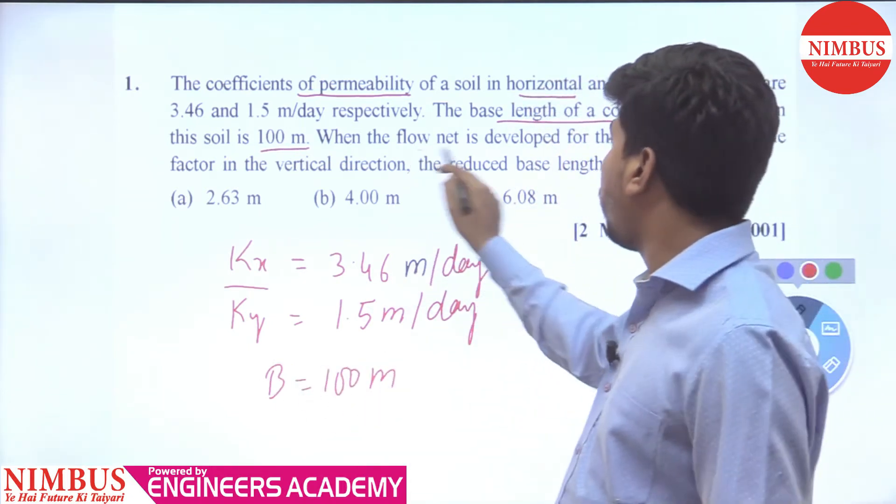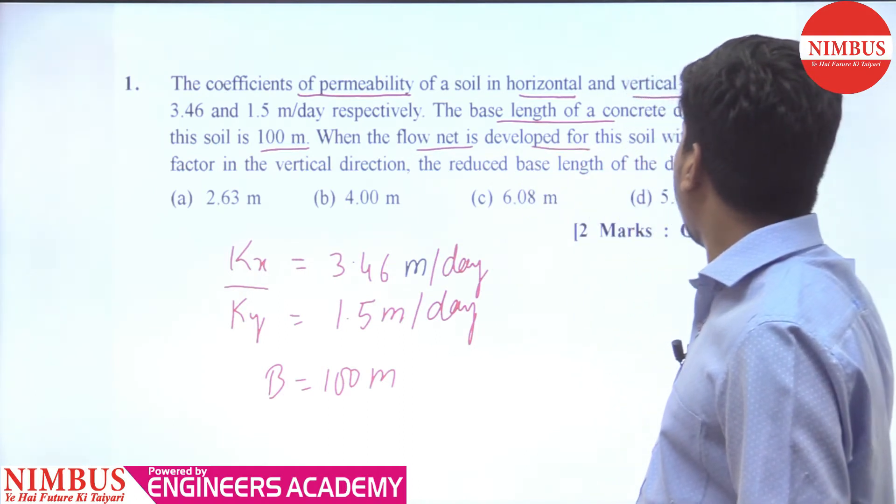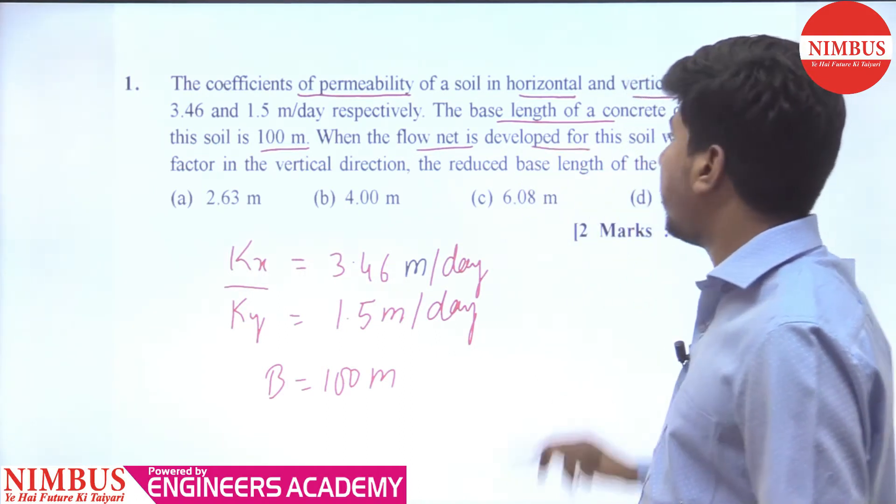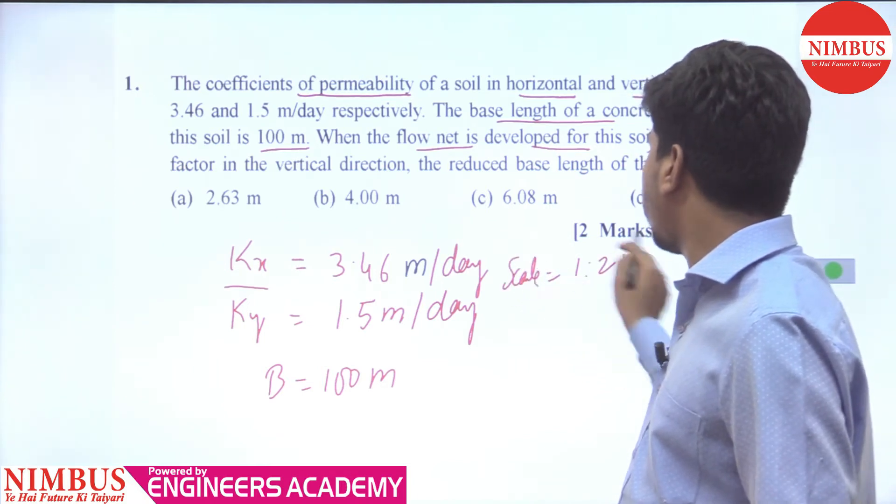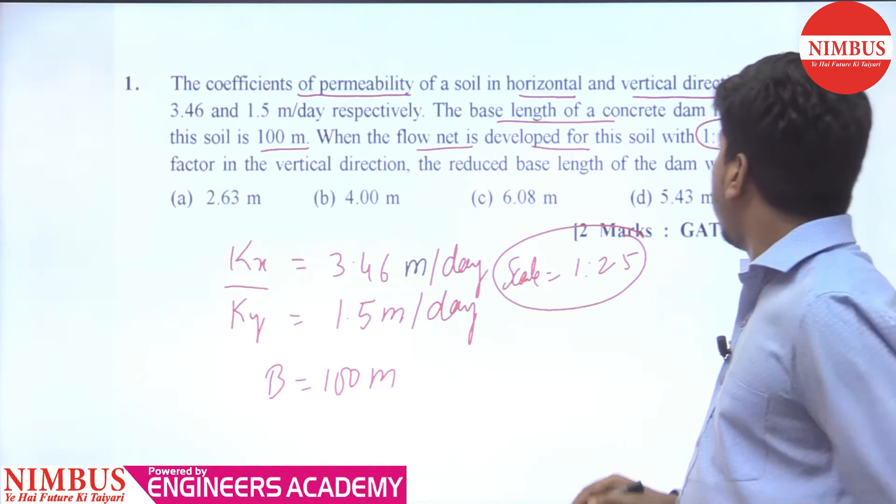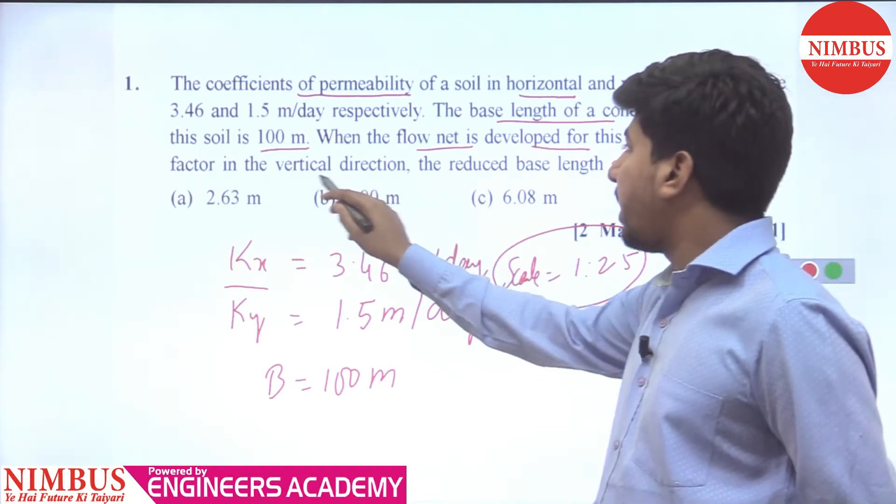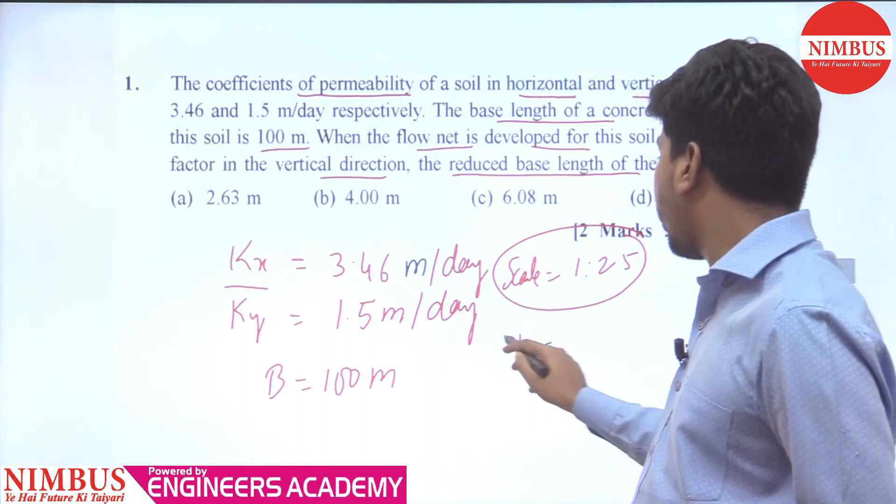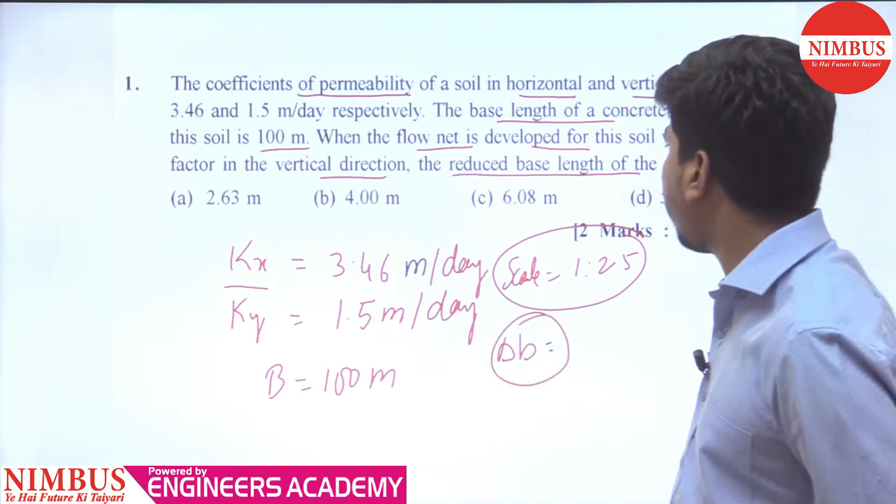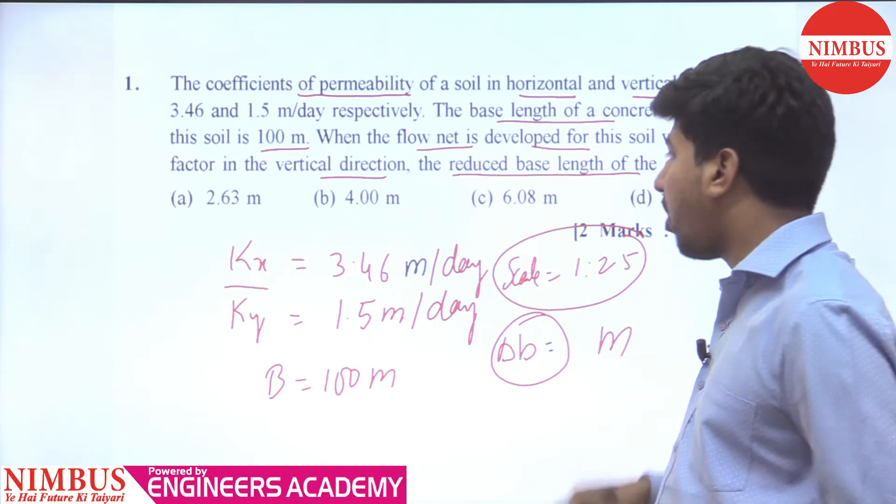When the flow net is developed for the soil with 1:25 scale, the scale is 1:25. Given a factor in the vertical direction, the reduced base length, we call it small b, we have to calculate this in terms of meter.